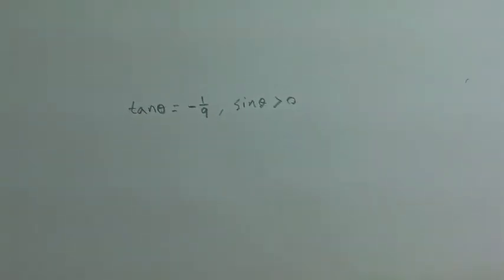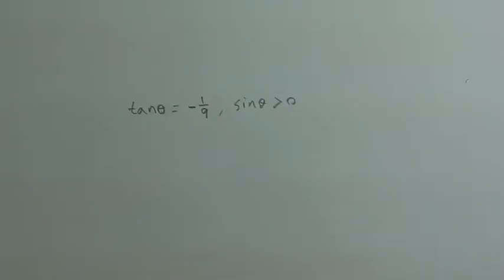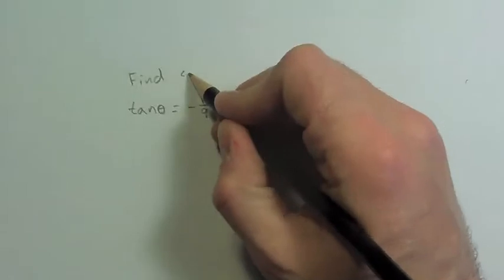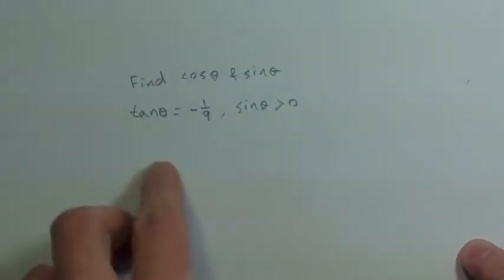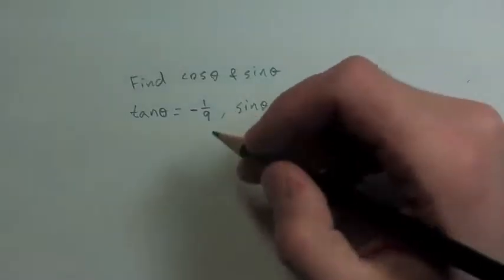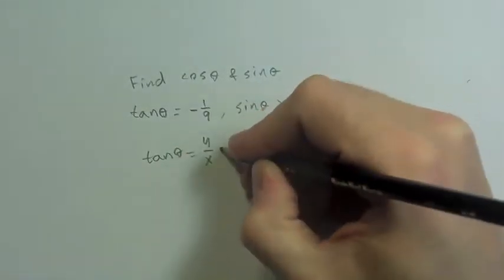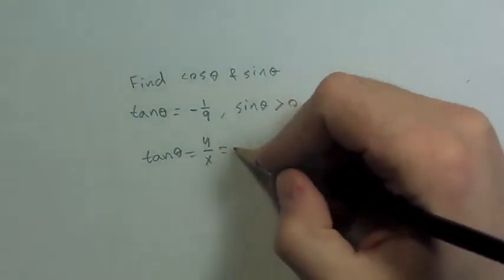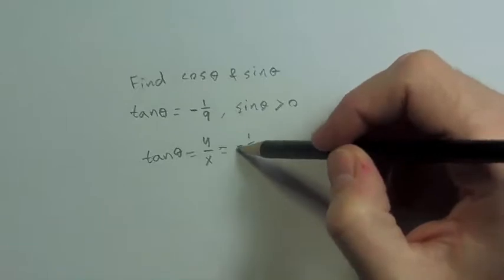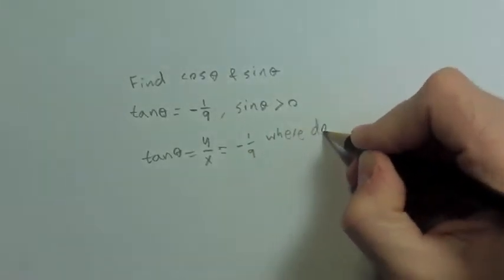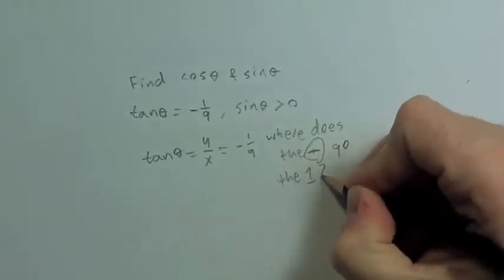Here, tangent theta equals negative 1/9 and sine theta is positive. We want to find sine and cosine. Tangent is y over x, and it's negative — so we have negative 1/9. So y is 1, x is 9, but where does the negative live? Does it go with the 1 or the 9?